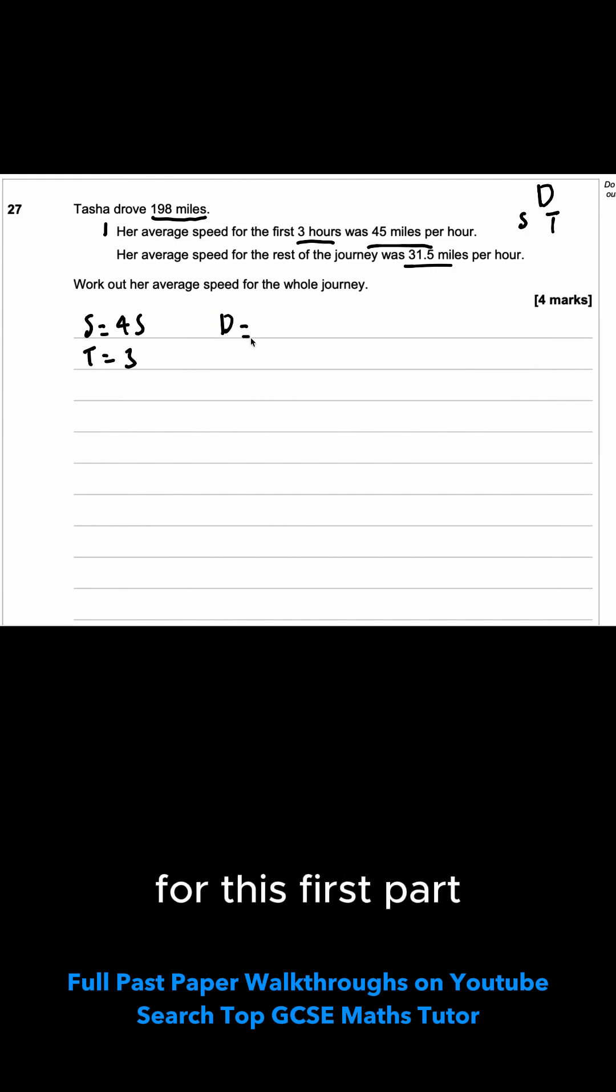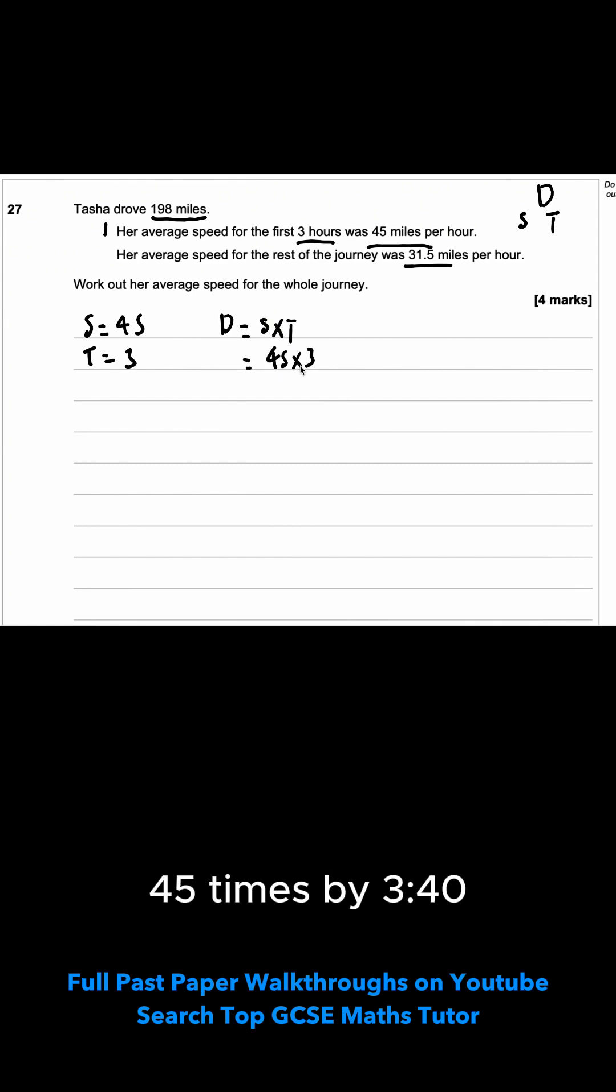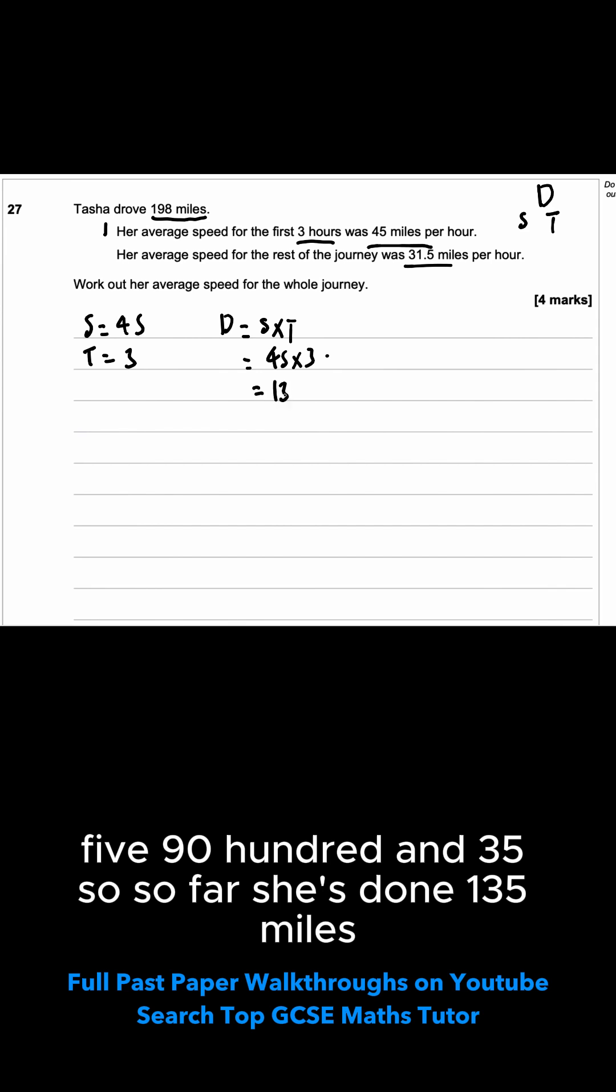So that means we're going to be finding out distance for this first part. So distance is equal to speed times by time. And here 45 times by 3, 45, 90, 135. So so far she's done 135 miles.